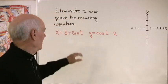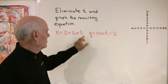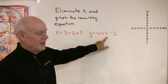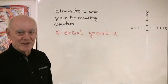Okay, we have another set of parametric equations right here, of x and y in terms of this parameter t, and we want to eliminate that parameter t, see what kind of equation we get, and then take a look at the graph.